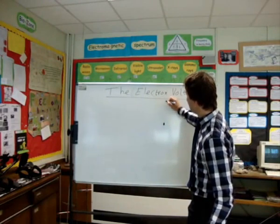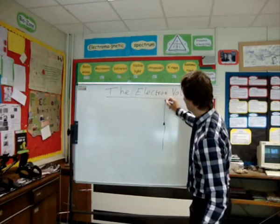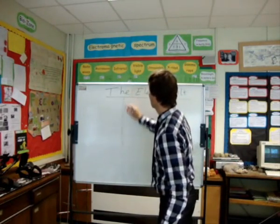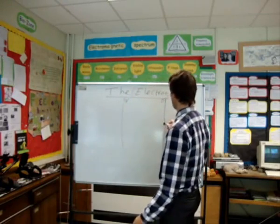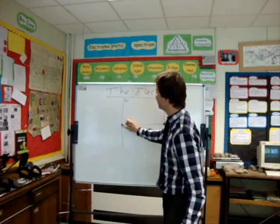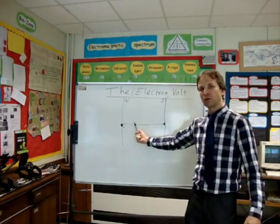...and it moves through a potential difference. Imagine that's 0 volts and this is 1 volt. When the electron moves through that potential difference, by the time it's got to that point there, it has 1 electron volt.